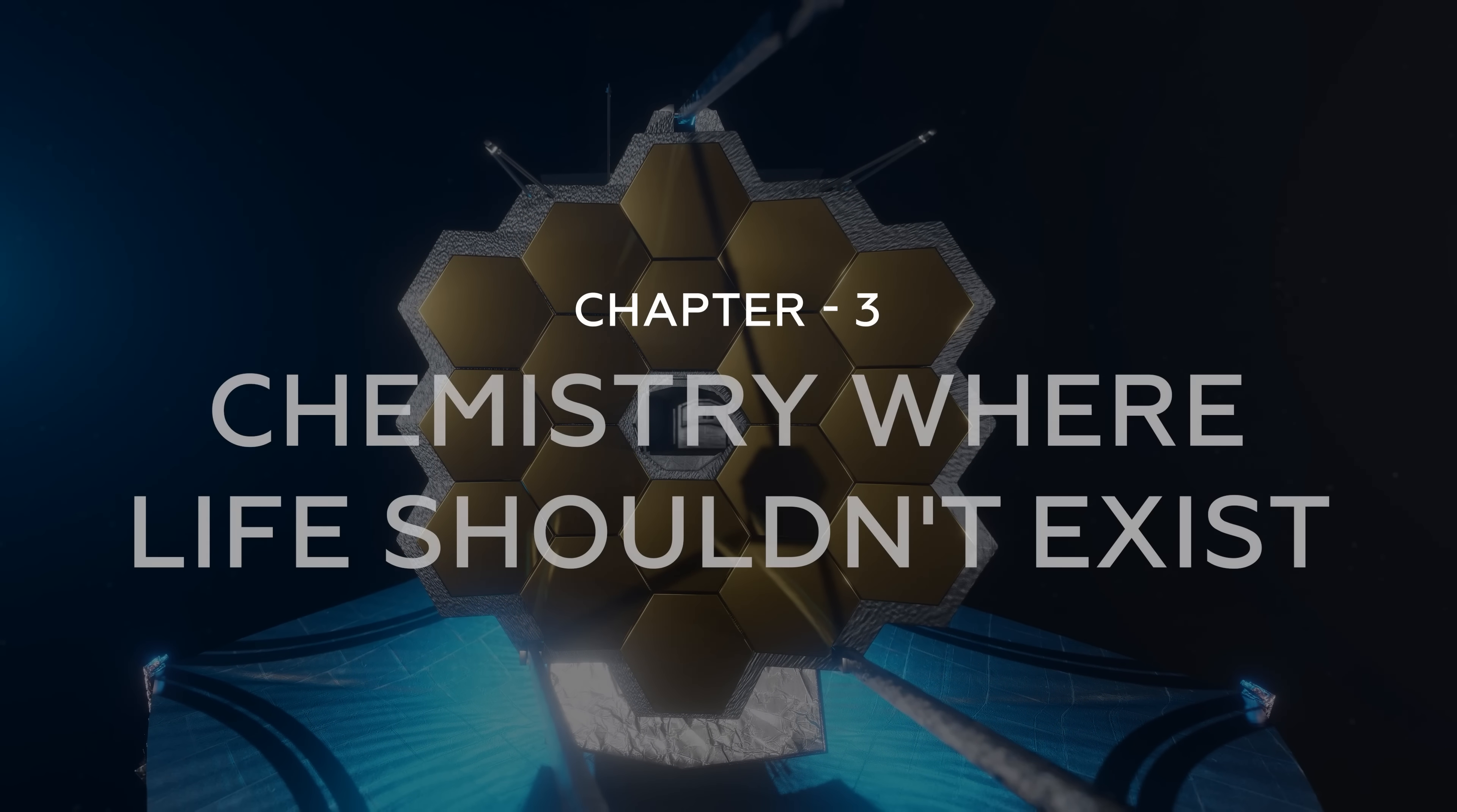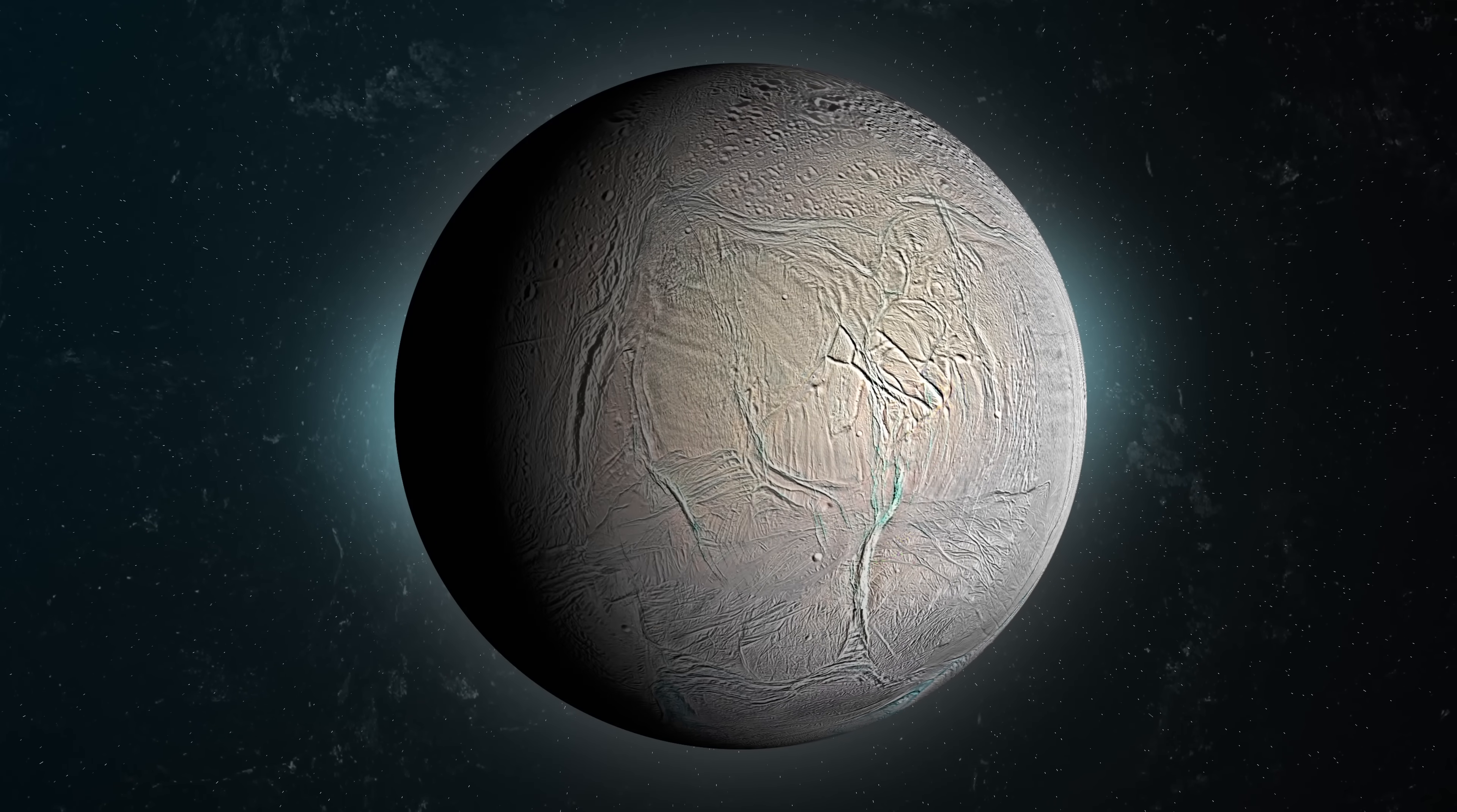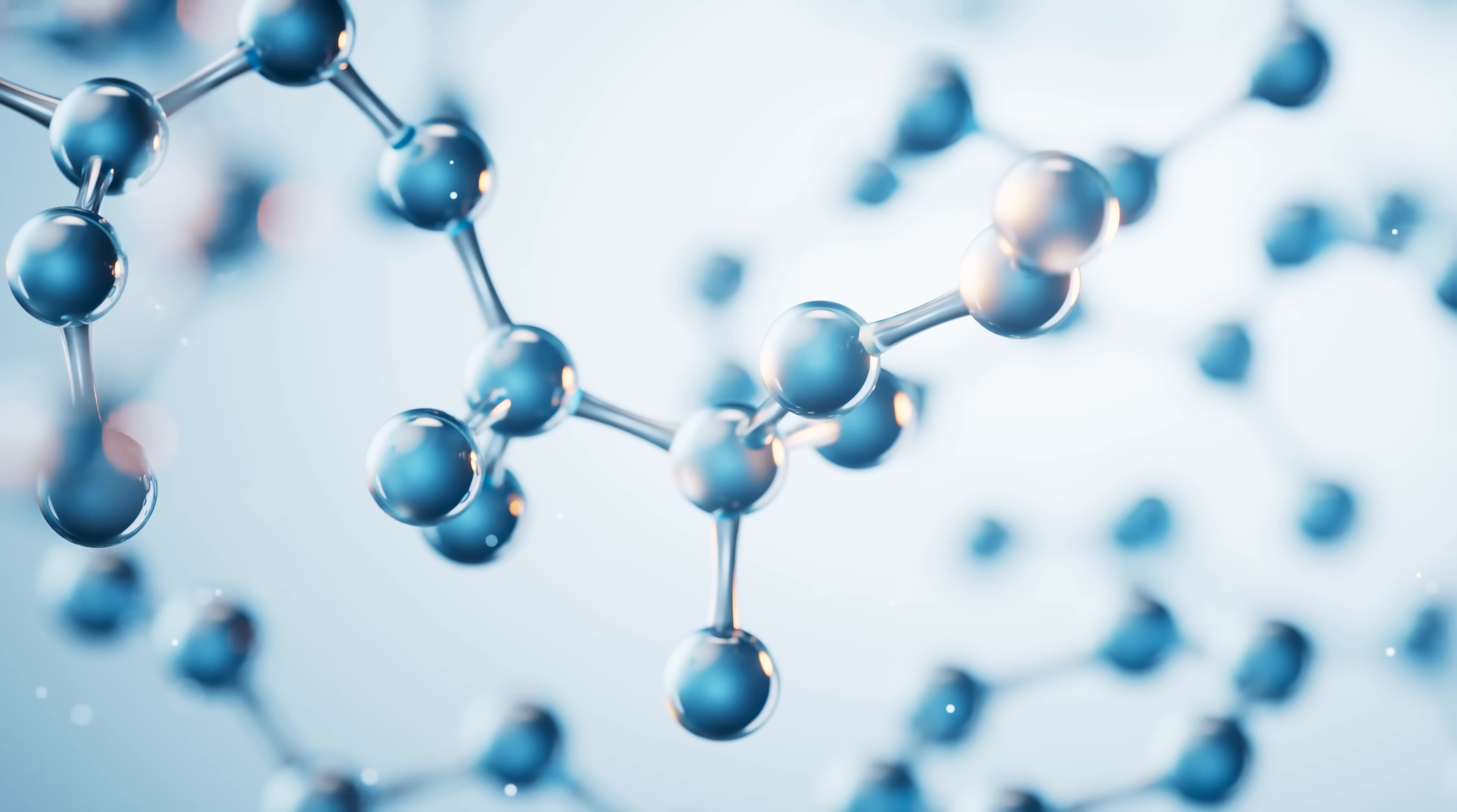Chapter 3. Chemistry Where Life Shouldn't Exist. Imagine a frozen wasteland where temperatures plunge to minus 200 degrees Celsius, a place so hostile even bacteria shouldn't survive. Now imagine Webb Telescope spotting the building blocks of life there. This isn't hypothetical. It's happening right now on Enceladus, Saturn's icy moon, and it's forcing scientists to rewrite the rules of biology. When Webb analyzed the plumes shooting from Enceladus's subsurface ocean, it detected phosphates essential for DNA at concentrations 500 times higher than Earth's oceans, ammonia as a potential energy source for life, and organic molecules complex enough to form amino acids.